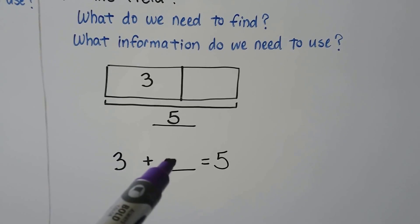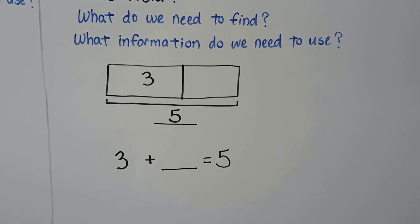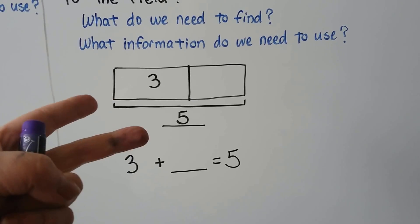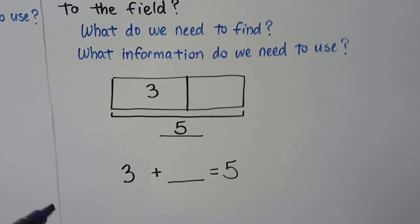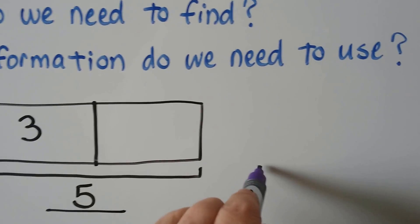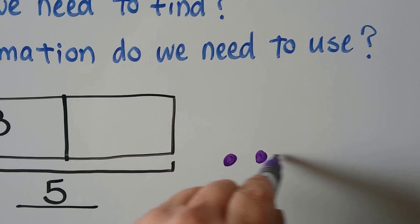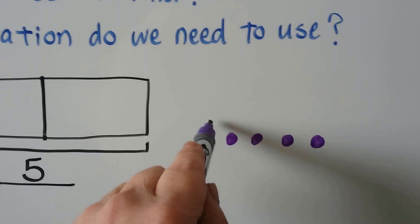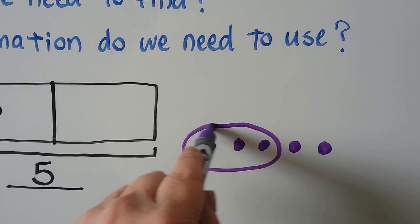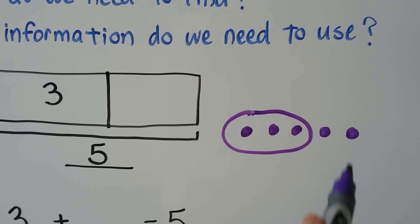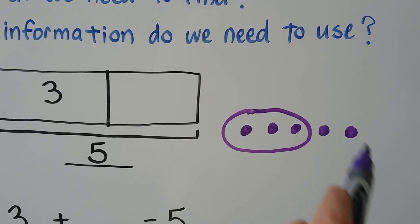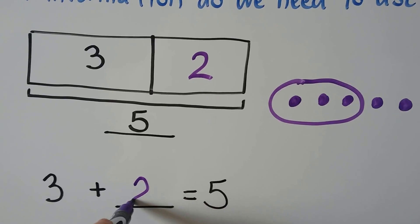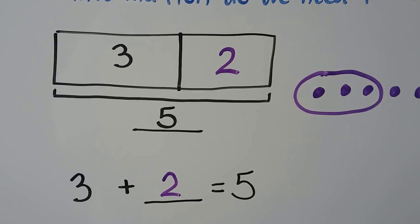Three plus some number is equal to five. We can start with three and count up: three, four, five. If there were five in the end and three were in the field in the beginning, then that means two must have run to the field. Three plus two is equal to five.